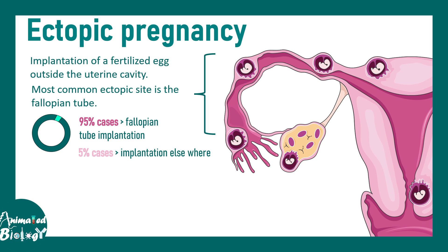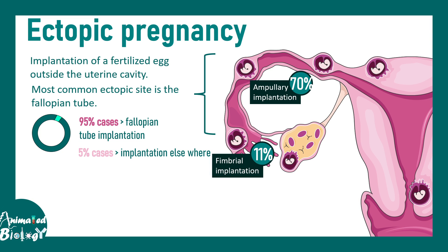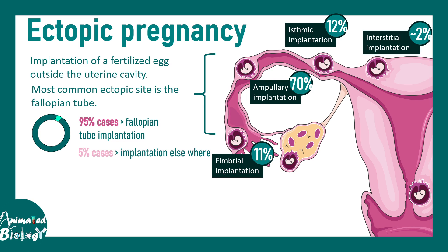In 5% of cases the implantation site is other than the fallopian tube. Within the fallopian tube, the most common site is the ampulla, accounting for 70% of cases. Fimbrial implantation is less common at 11%, while isthmic implantation accounts for about 12% of cases. Interstitial implantation is very rare, and in extremely rare occasions implantation can happen in the cervix as well.